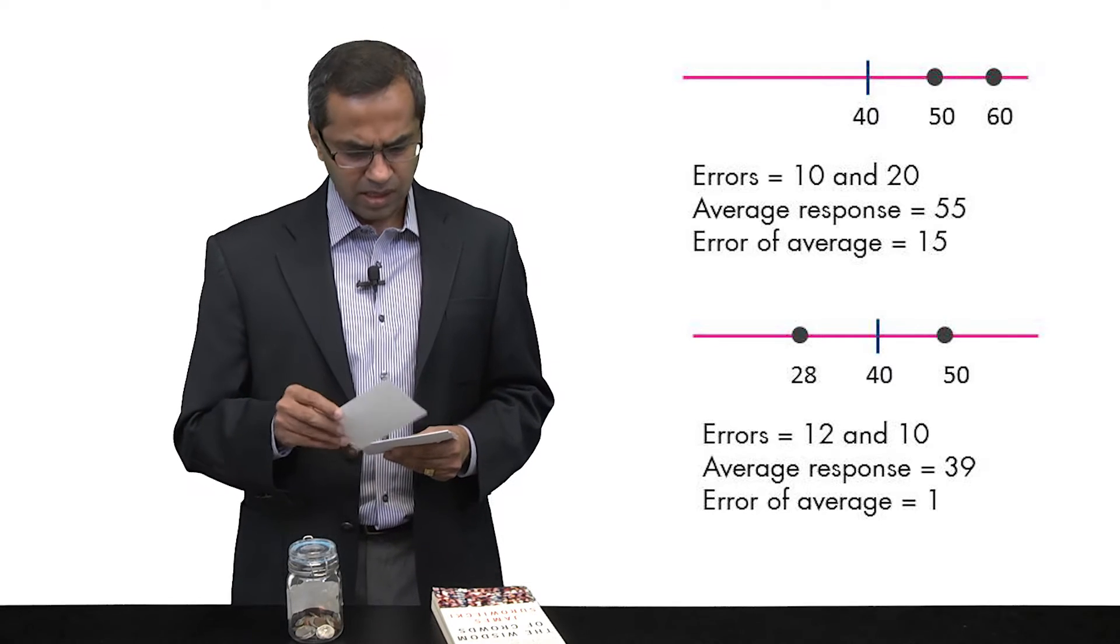What is that telling us? That's telling us that in many real-world cases, it turns out that averaging the opinion of two judges is often better than listening to any advice of any one judge on their own. Again, let's think through this. If two experts gave you advice and you were asked what do I do with the advice, what would most of us do? Here's what we'd do. We'd try and figure out which of these two experts is the better expert and we'd go with that judgment.